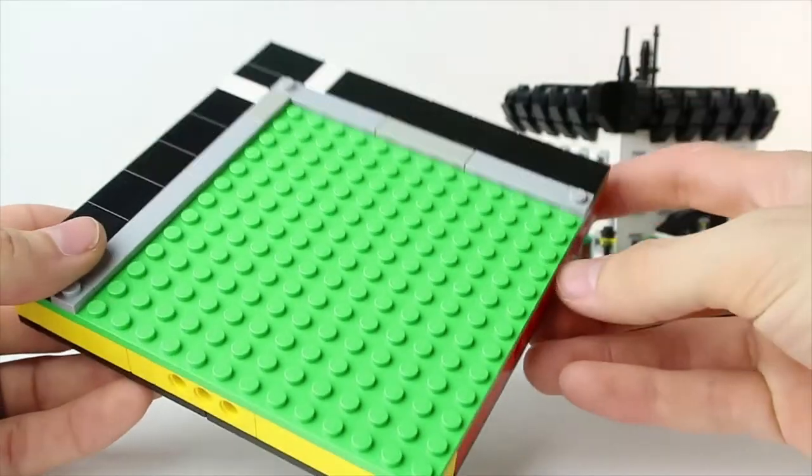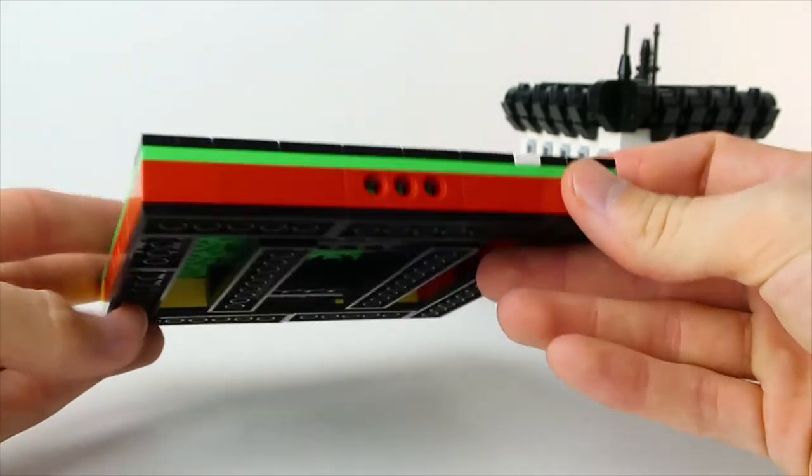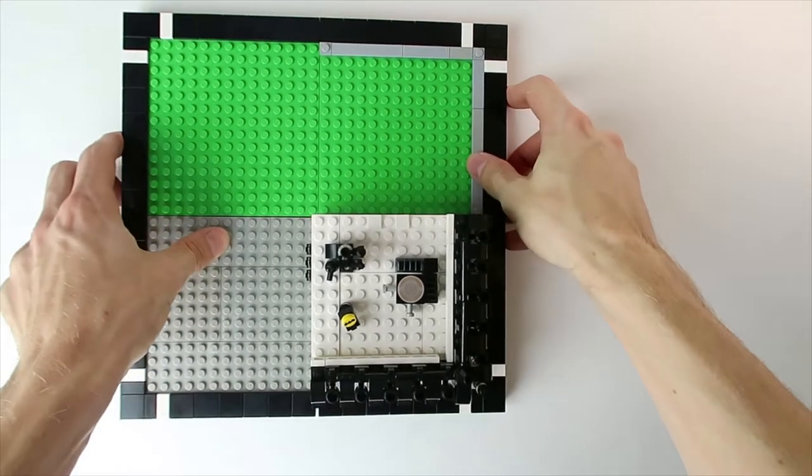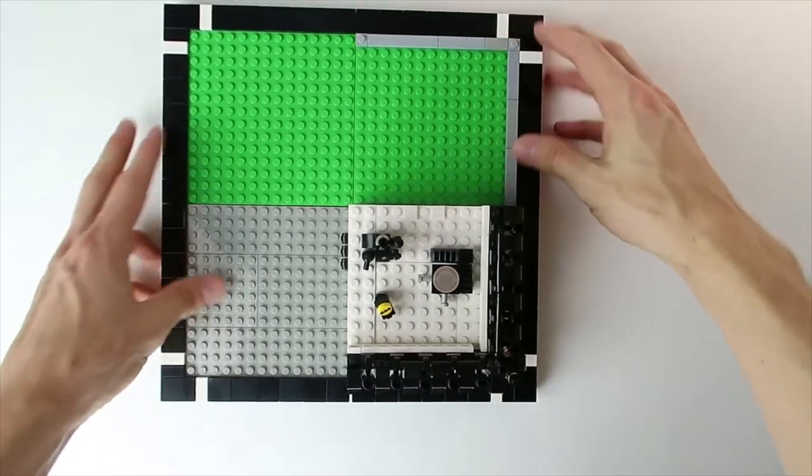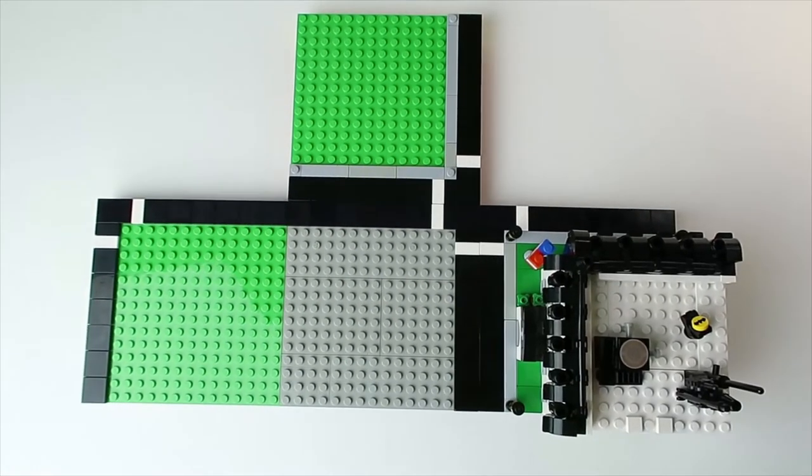Basically all you need is two 16x16 plates sandwiching some bricks with some Technic bricks in the middle. This allows it to be modular, so one 16x16 base is the corner of a city square. Put four together this way and you can make an intersection, or change them up in any variation to get even more creative.